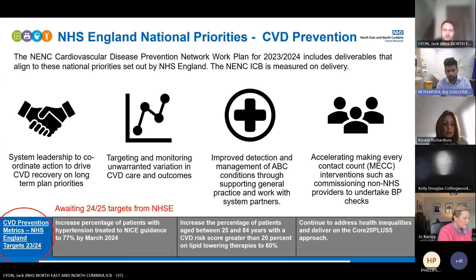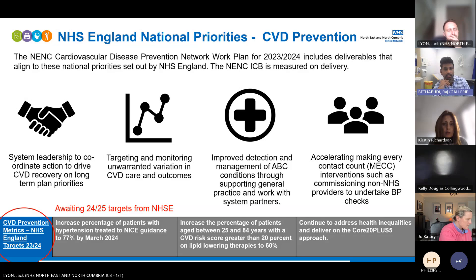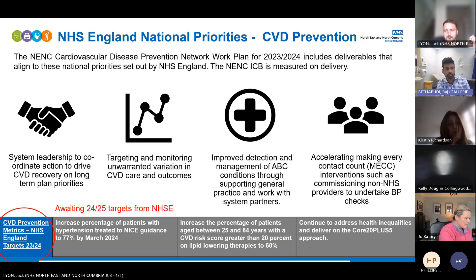The prevention targets are: at least 77% of patients on hypertension registers to be treated to target. On the positive side, North East North Cumbria is the leading ICB in the country to hit those targets — we are around 71–71.5% at the moment, but that's not enough, we want to reach 77%. The second target is to ensure that at least 60% of patients with a QRisk score between ages 25 and 84 are on a statin.